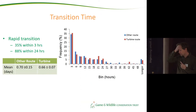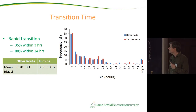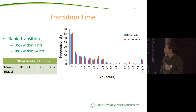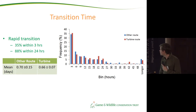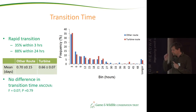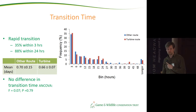Looking at transition time, the majority of smolts made a rapid transition: 35% covered the 3.5 km to East Stoke within 3 hours, and nearly 90% did it within 24 hours. The blue represents fish using other routes and the red those using the turbine — and again, there was no significant difference in transition time between route choices.